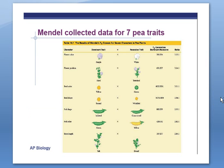Mendel collected data for seven pea traits: things like purple and white flowers, whether the flower was axial (toward the middle) or terminal (toward the top), yellow peas and green peas, round peas and wrinkled peas — all kinds of different traits he was working with.